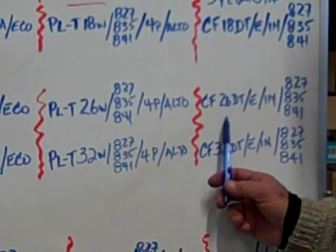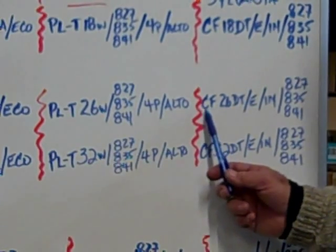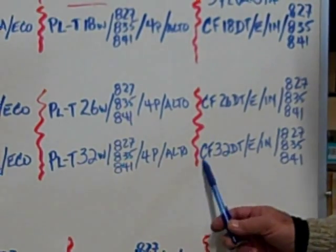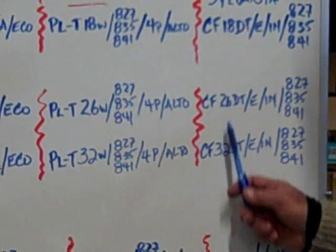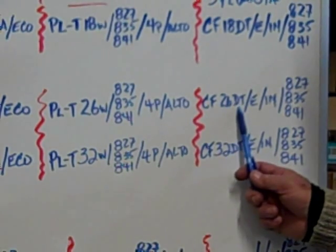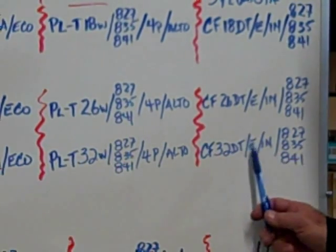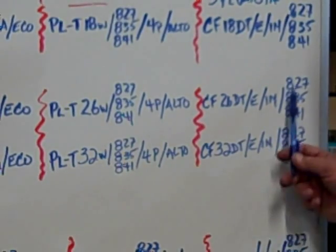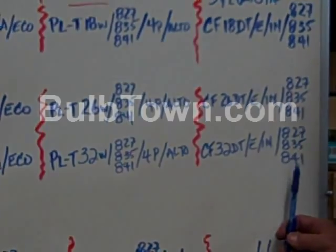Sylvania OSRAM, their designation starts off with CF then the wattage, 26 or 32, DT slash E slash IN and then slash the color temperature.